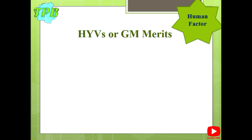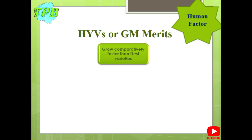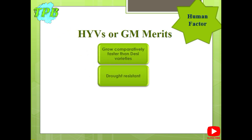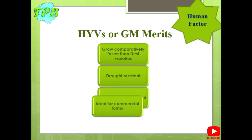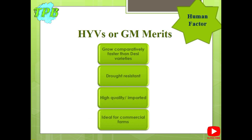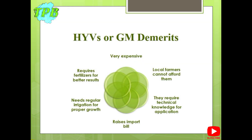Let's have a look at some merits of these seeds. These seeds grow comparatively faster than desi varieties, thus saving time for the next harvest. They are drought resistant and ideal to grow across different terrains. These seeds mostly have high quality as they are imported — for example, Pakistan imports seeds for wheat harvest. These seeds are ideal for commercial farms and may produce double the yield compared to desi varieties.